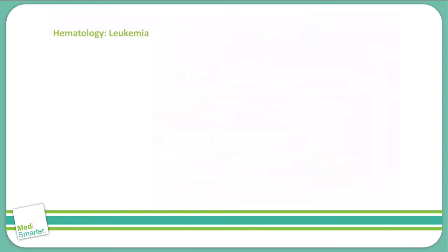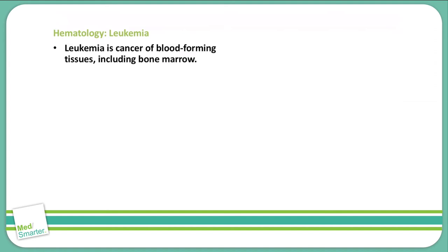Looking at the leukemias, a leukemia is a cancer of the blood forming tissues, including the bone marrow. Most of the time we see cancer signs developing in the bone marrow first, before we see them elsewhere in the body.